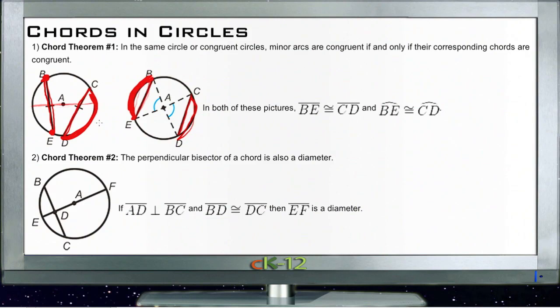So across two different circles or within the same circle. Our second theorem is that the perpendicular bisector of a chord is also a diameter. Now this makes sense if you think it through.